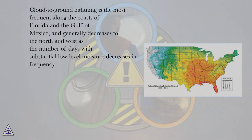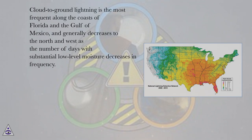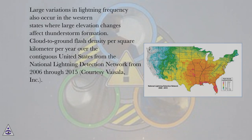Cloud to ground lightning is the most frequent along the coasts of Florida and the Gulf of Mexico, and generally decreases to the north and west as the number of days with substantial low-level moisture decreases in frequency. Large variations in lightning frequency also occur in the western states where large elevation changes affect thunderstorm formation.